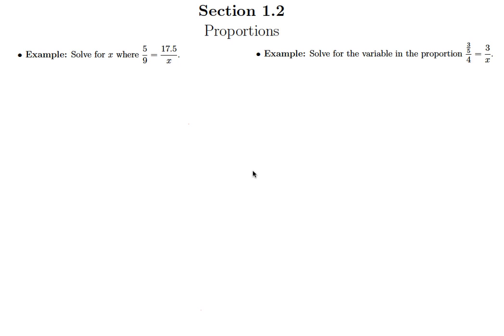In this lesson we're going to take on a couple more examples of solving proportions. So first of all we'll start with this one on the left here: 5 over 9 equals 17.5 over what? Over x. We're trying to figure out what x is.